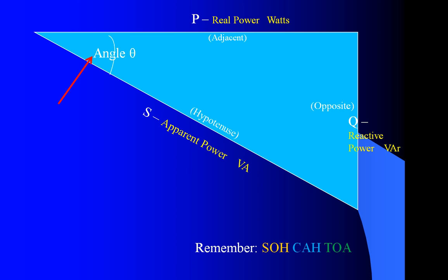We can calculate all of the angles and relationships using trigonometry. If we have any two of these items, we can then find the rest, as shown by these commonly used electrical formulae.